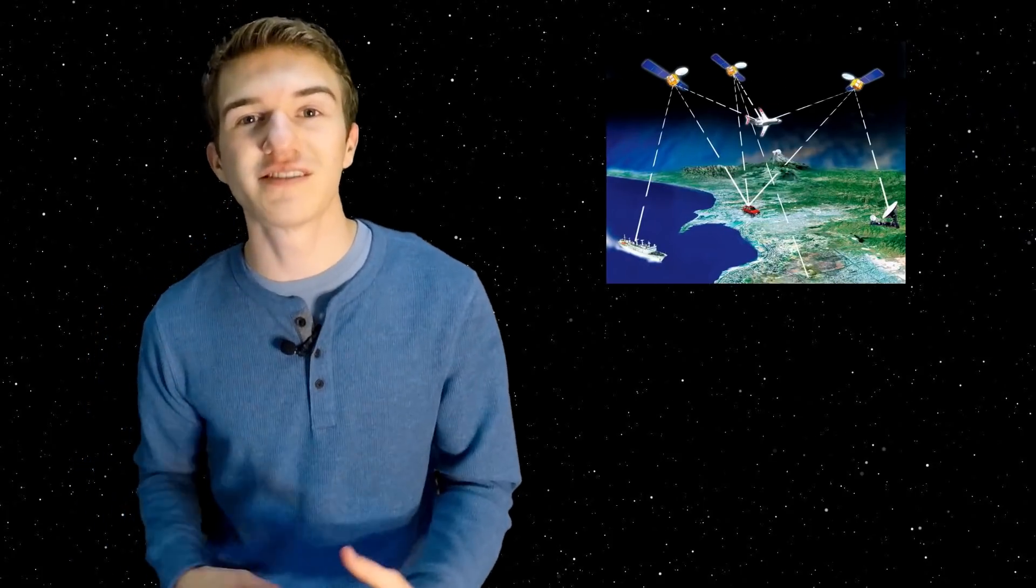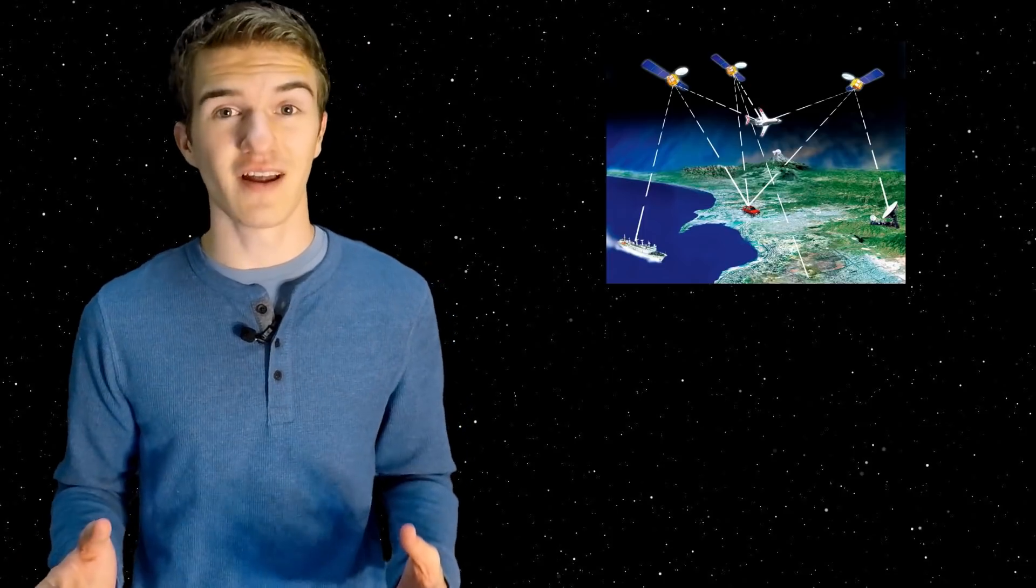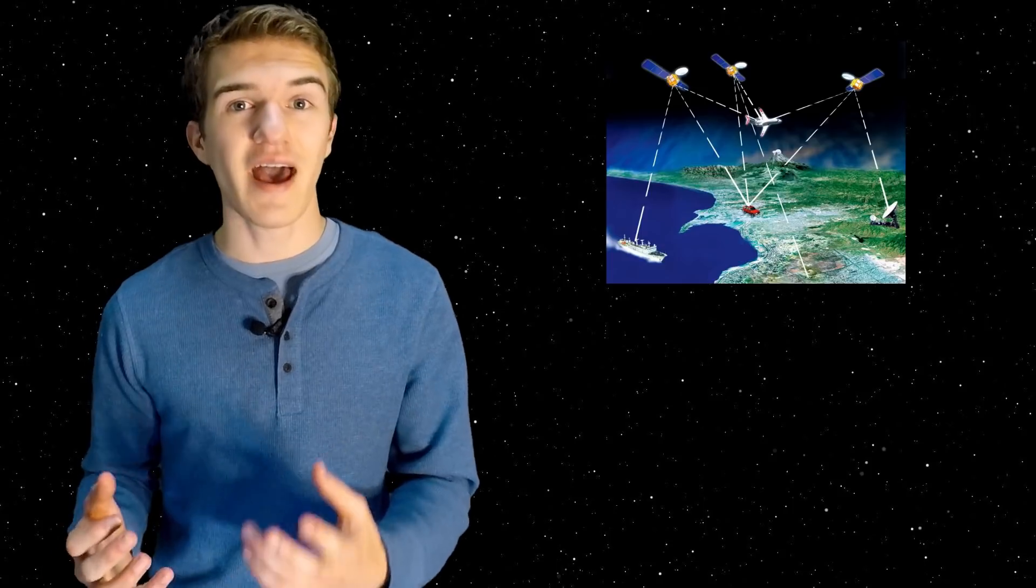what happens is your phone sends a signal to one of those satellites, or actually a lot of those satellites, and then depending on how much time it takes to get to that satellite, and also what the wavelength it receives, will determine your exact position here on Earth.